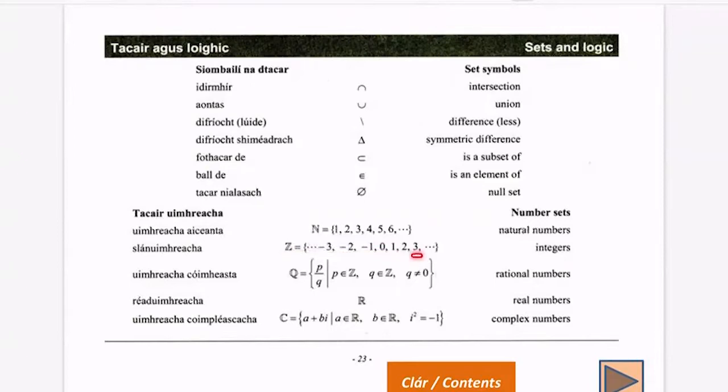For example, that number three there could be written as a fraction as three over one. So natural and integer numbers are also rational numbers.